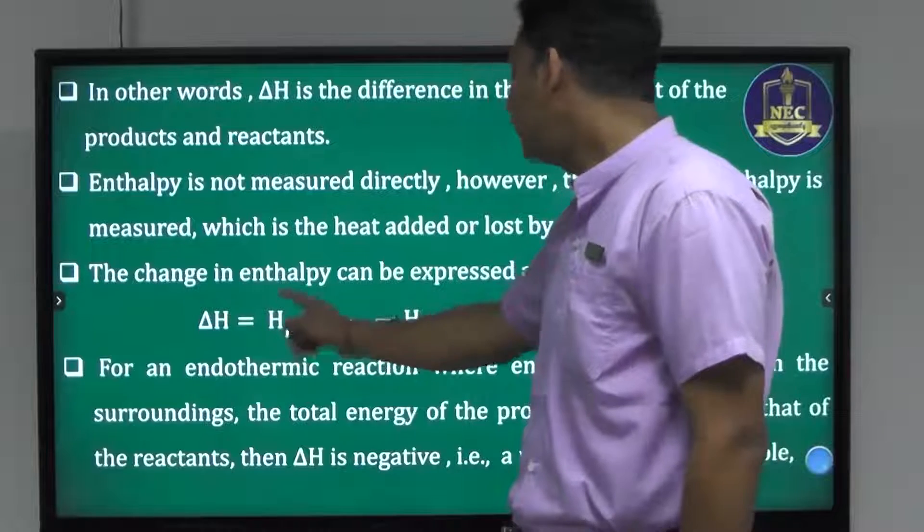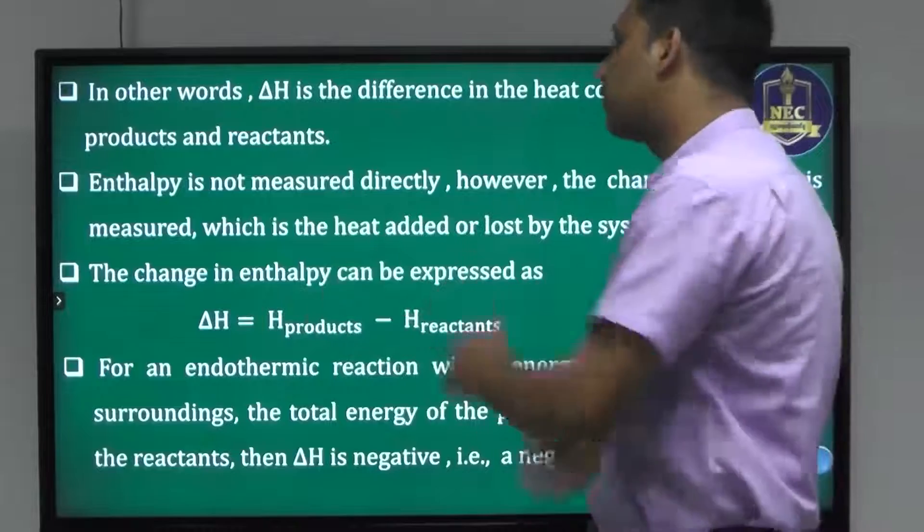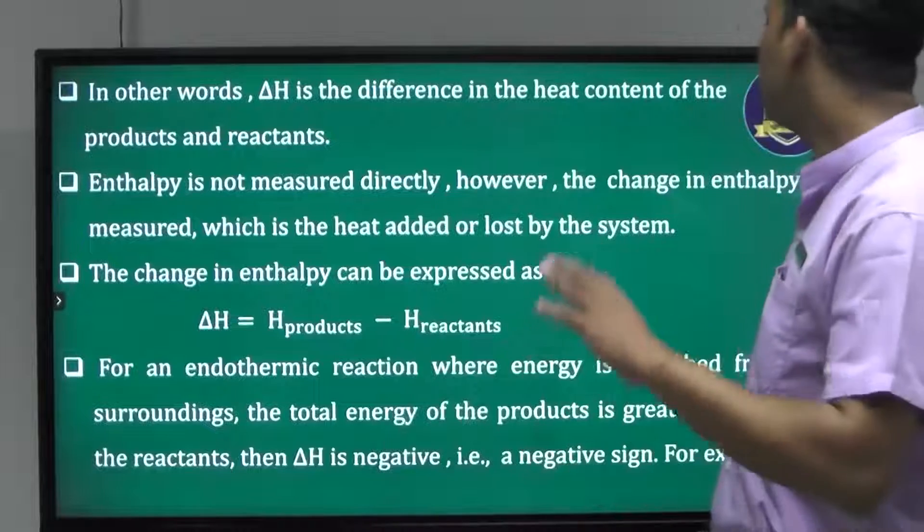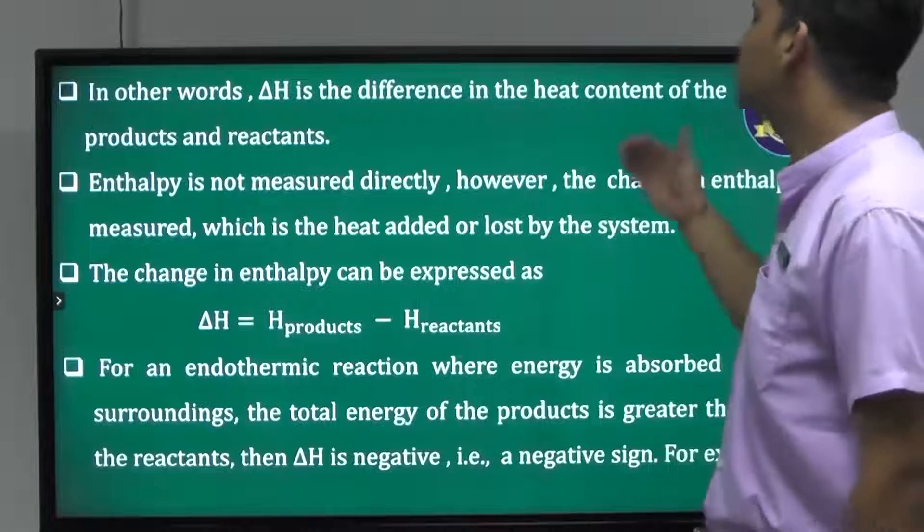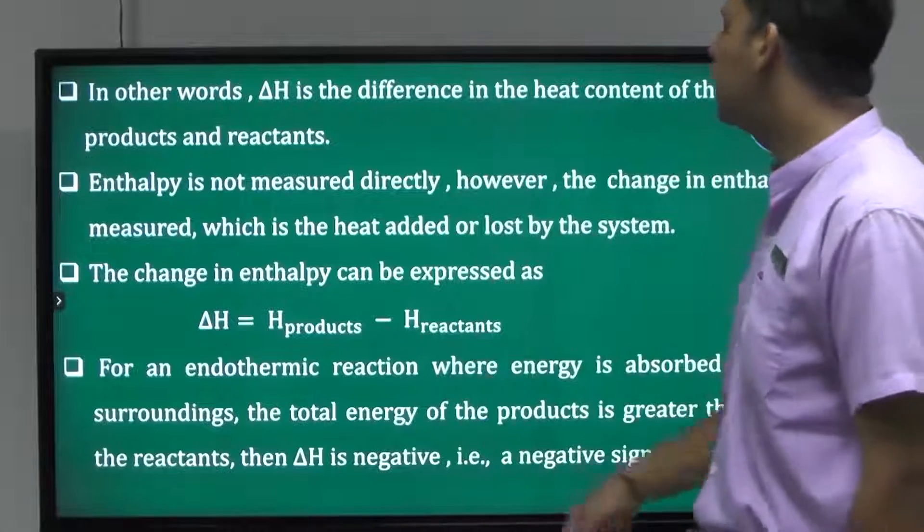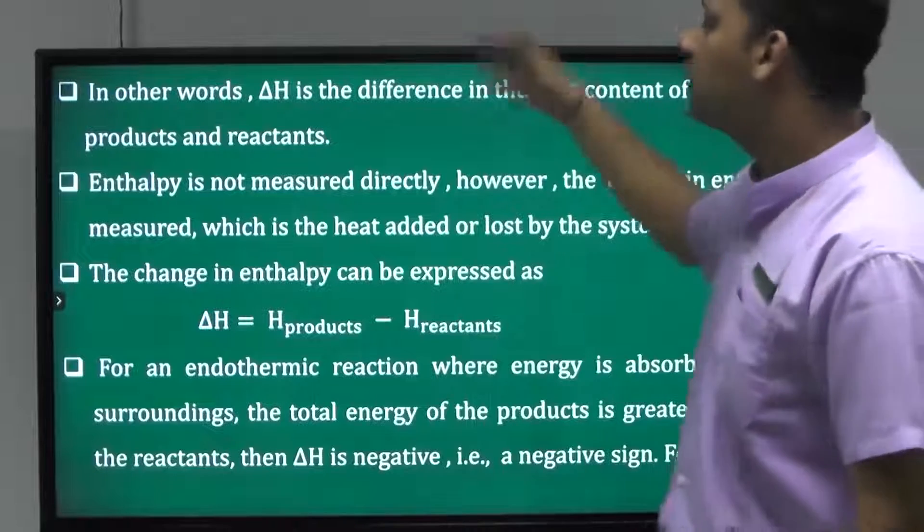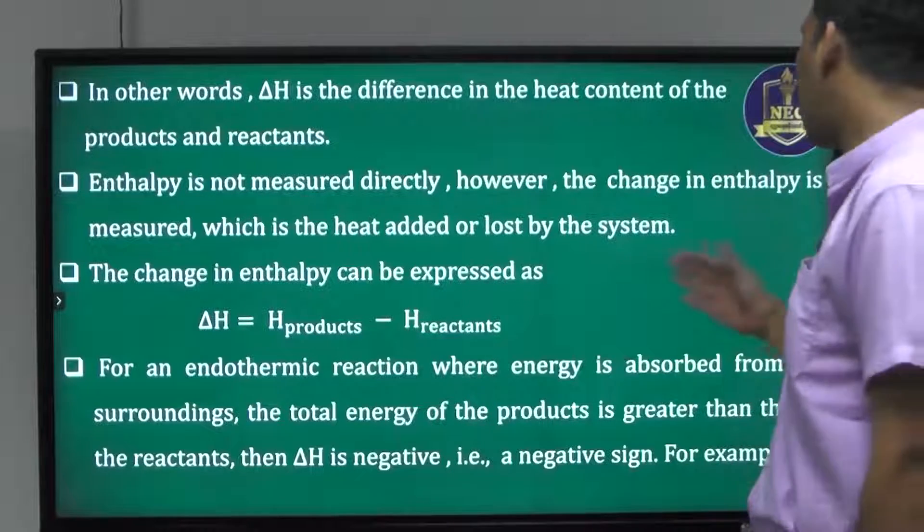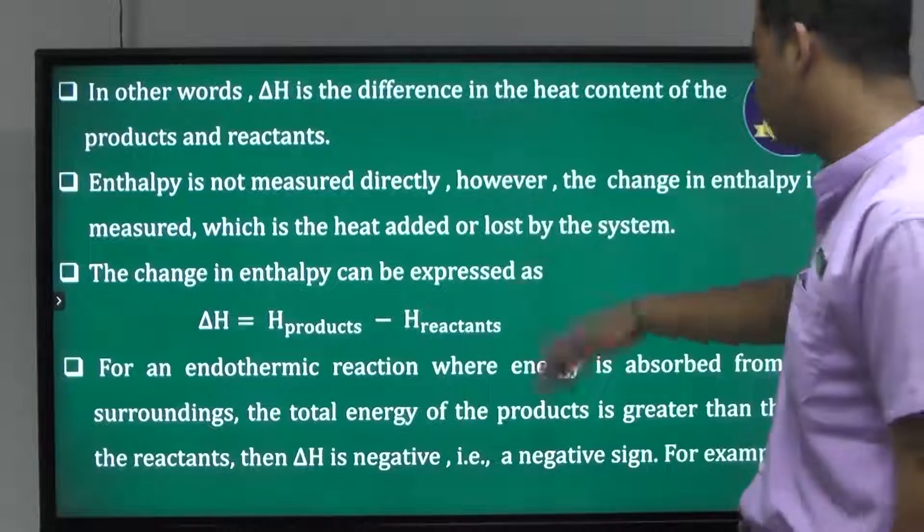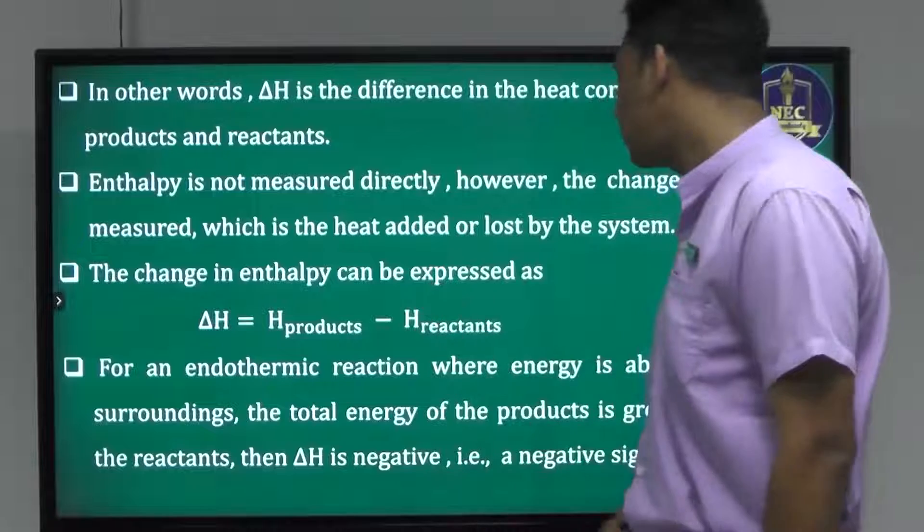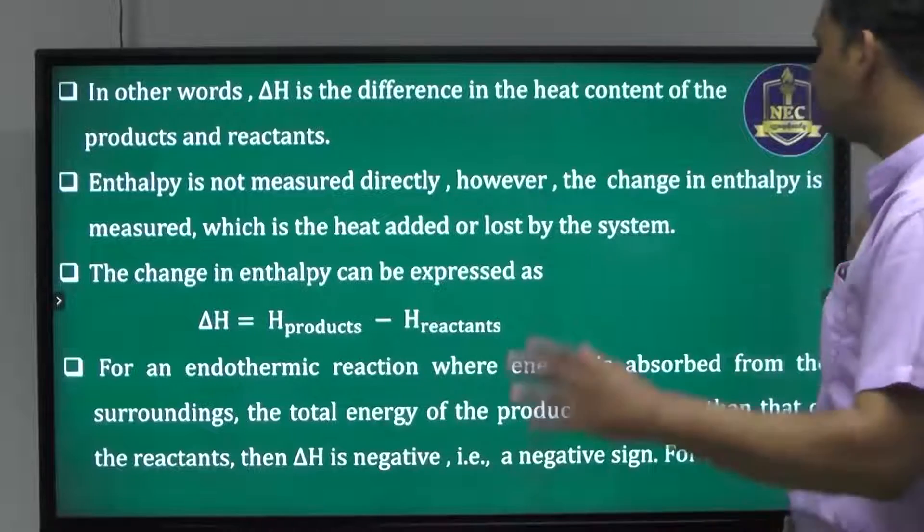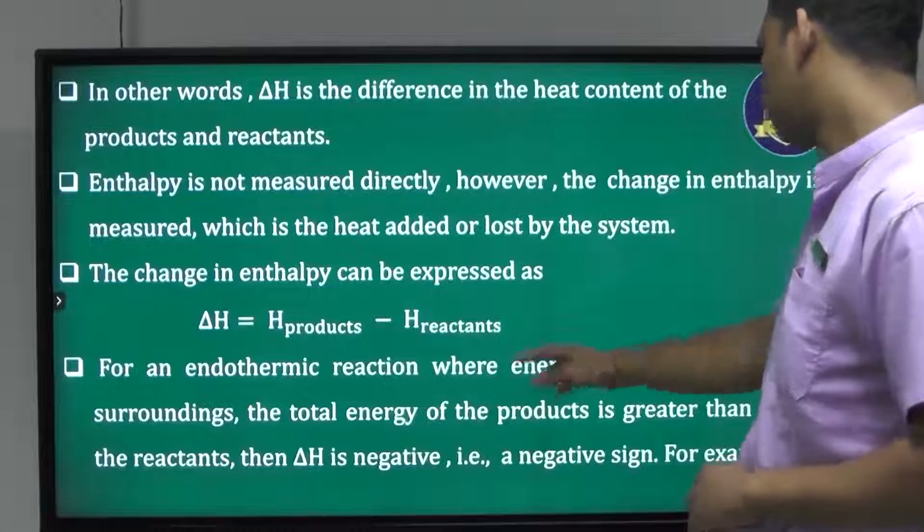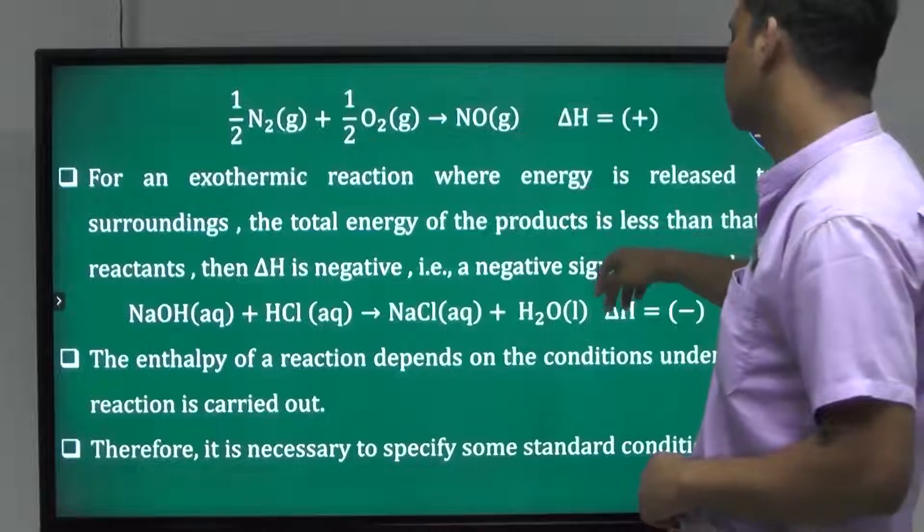If the total energy of the products is less than that of the reactants, then delta H is negative. When you have the reaction, you can see the energy released. The energy is released to the surroundings.